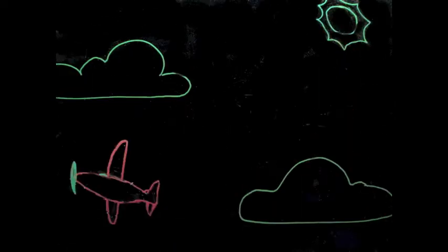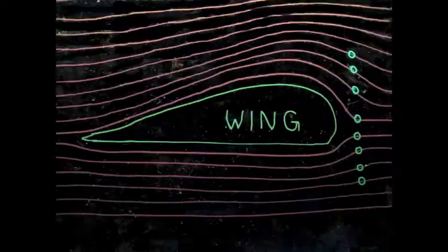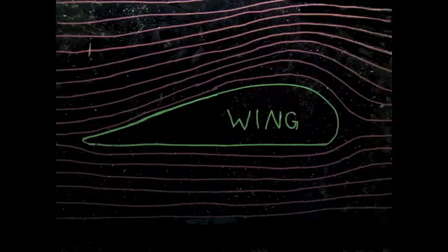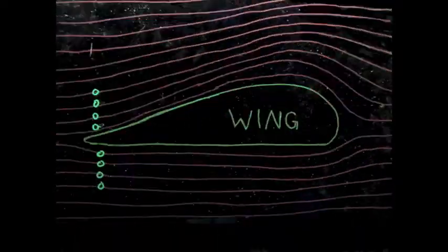In order to explain the Bernoulli effect, let's take a look at the wing of an airplane. As the wing cuts through the air, the air has to flow over and under the wing. Because of the curve of the top part of the wing, the air must travel a longer distance in the same amount of time as the air under the wing, therefore has a higher velocity.